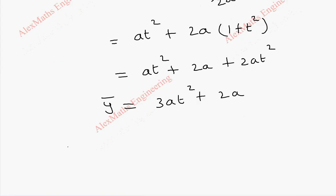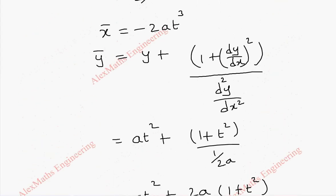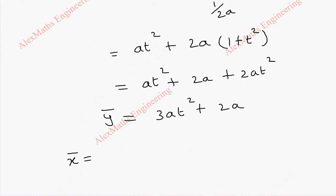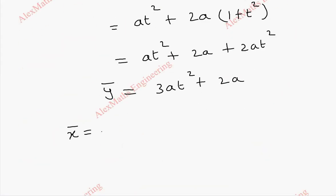So we got x̄ and y̅. This is the center of curvature. x̄ is minus 2at³, and ȳ is 3at² plus 2a.